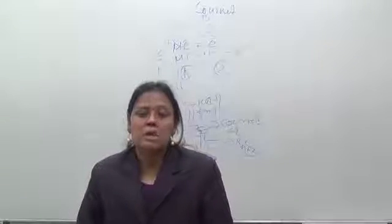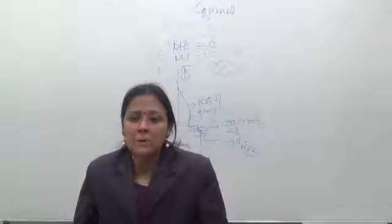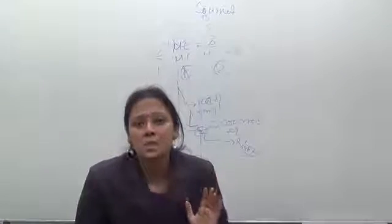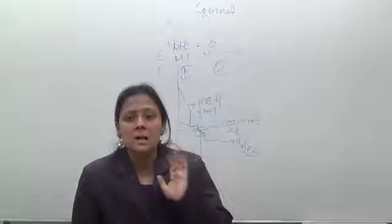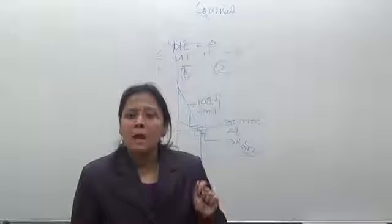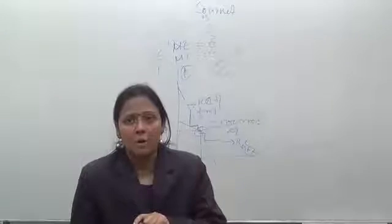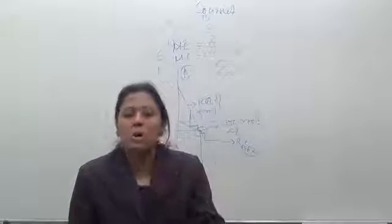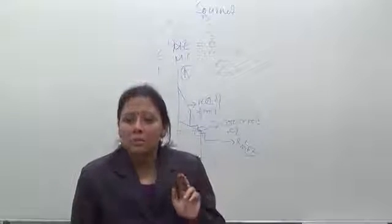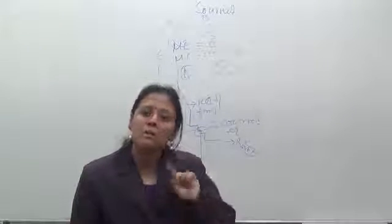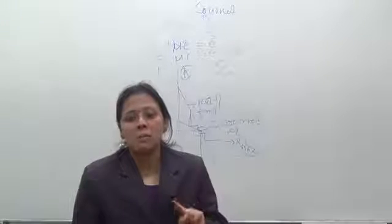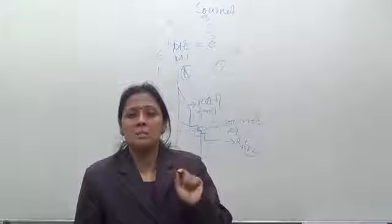This is Stackelberg's behavior model: one duopolist is sufficiently sophisticated to recognize that his competitor acts on the Cournot assumption. That means one of the firms understands that there is another firm who believes in naive behavior or works under the Cournot assumption. This recognition allows the sophisticated firm to determine the reaction curve of the rival and incorporate it in his own profit function, which is maximized like a monopolist. This is the turning point of his model.